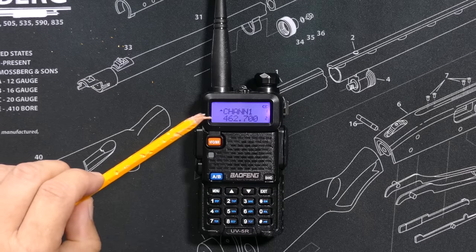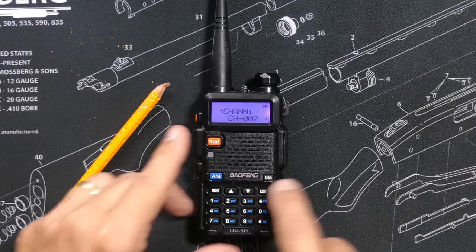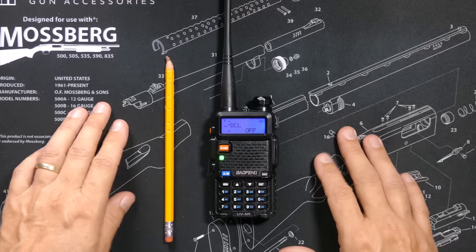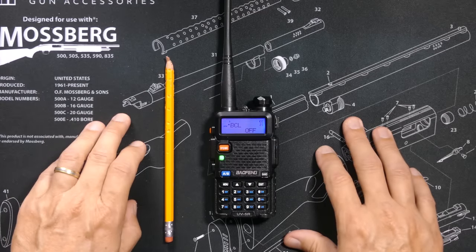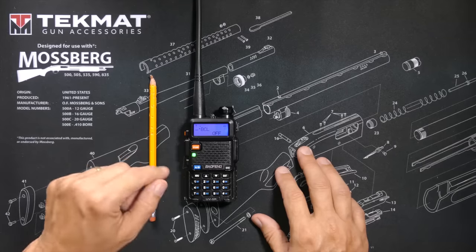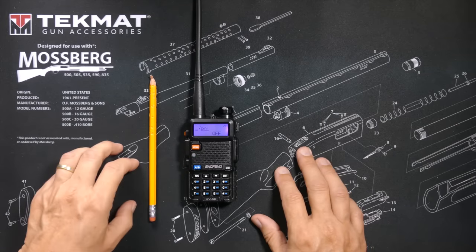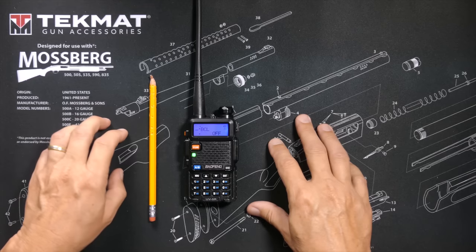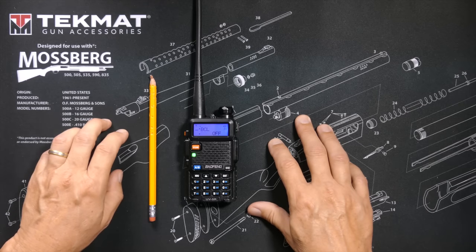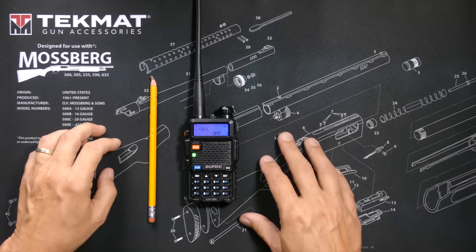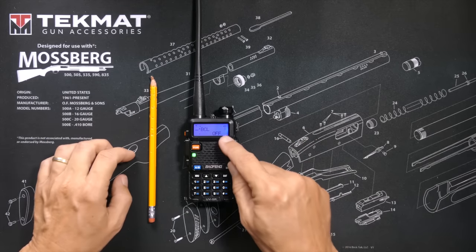For MDF-A and MDF-B, I prefer to show the channel number. Menu option number 23: BCL. BCL does not stand for a children's football league — it stands for Busy Channel Lockout. When BCL is enabled, the radio will not allow you to transmit if it detects that someone else is already transmitting on that frequency. So if you want to step over your friends when they are trying to talk, be sure to set this to off.